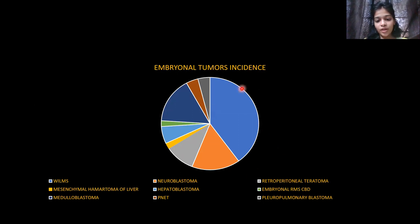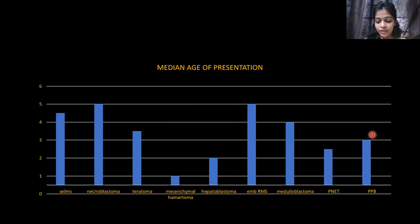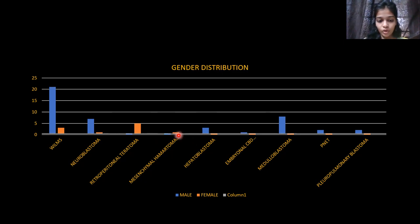Regarding incidence, Wilms tumour and neuroblastoma constitute the majority of abdominal tumours, and medulloblastoma the majority of brain tumours. We did not get enough chest tumour cases to comment, but the incidence correlates with the literature. Median age of presentation: Wilms tumour ~4.5 years, neuroblastoma ~5 years, teratoma ~3.5 years, mesenchymal hamartoma below 1 year, hepatoblastoma ~2 years, rhabdomyosarcoma ~5 years, medulloblastoma ~4 years, PNET ~2.5 years, and pleuropulmonary blastoma ~3 years. Except for retroperitoneal teratoma and mesenchymal hamartoma — which were seen in females in our study — all other tumours showed male preponderance.